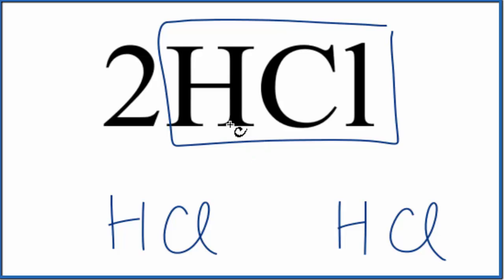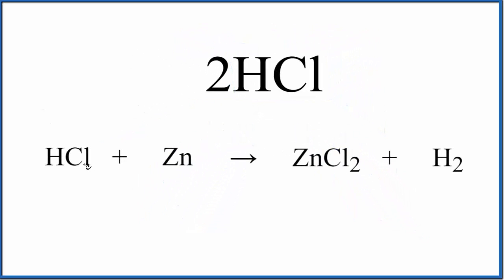Most often when we say HCl, we don't have anything in front of it. We'll normally see this when we're balancing equations. For example, in this equation we have hydrochloric acid plus zinc, and we end up with zinc chloride and hydrogen.